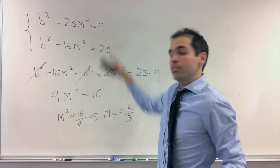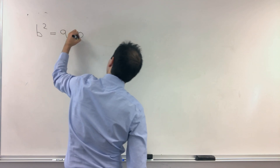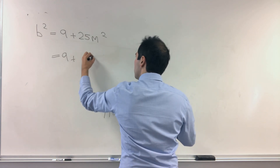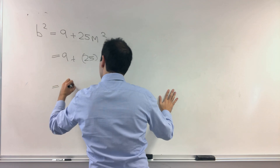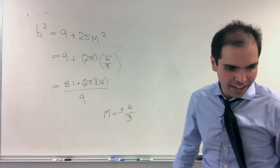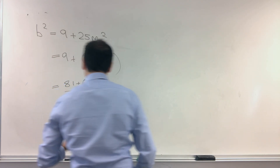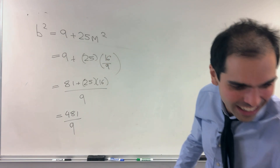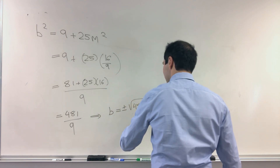Just plug m² = 16/9 into the first equation: b² = 9 + 25·(16/9) = (81 + 400)/9 = 481/9. Unfortunately it's not a perfect square, I wish it simplified to something nice, but still: b = ±√481 / 3.